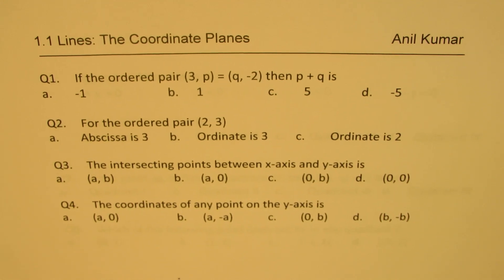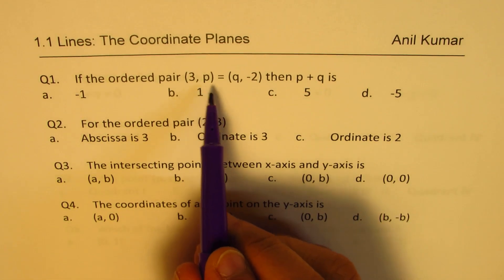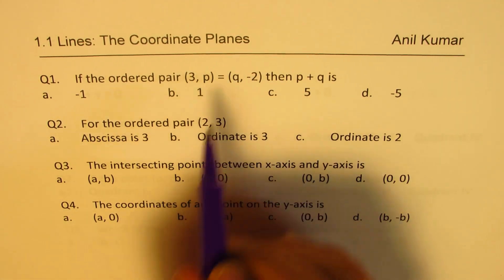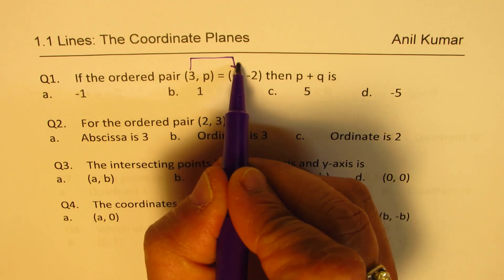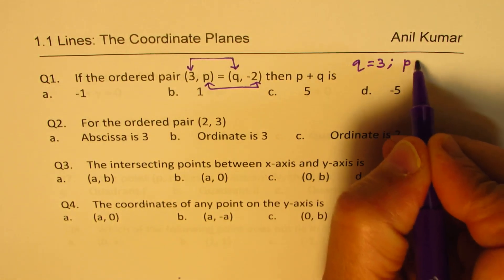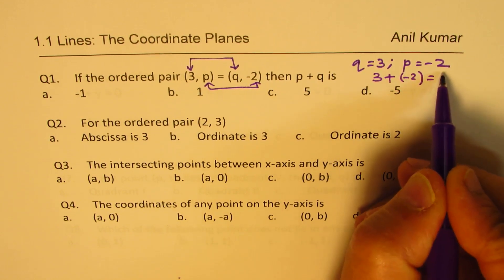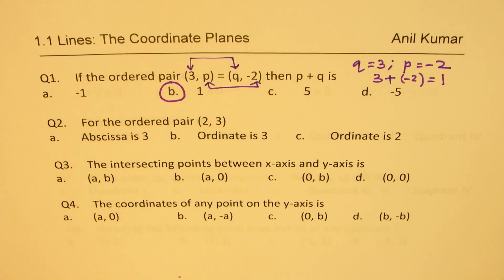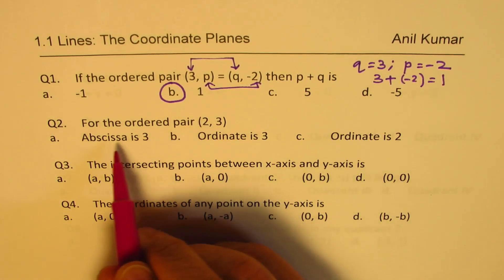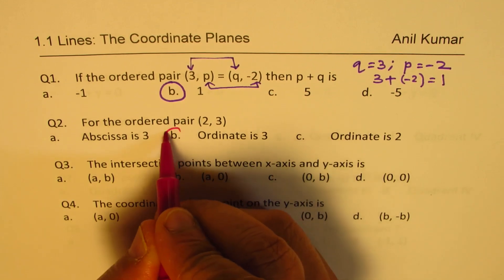Question 1: If ordered pair (3, p) equals (q, -2), then since the two ordered pairs are equal, their x values and y values are exactly the same. So q = 3 and p = -2. We want p + q, which is 3 + (-2) = 1, so option B is correct. For Question 2, for the ordered pair (2, 3), the first value — the x-coordinate — is called the abscissa, and the second value — the y-coordinate — is called the ordinate. So the ordinate is 3, which is the correct answer.